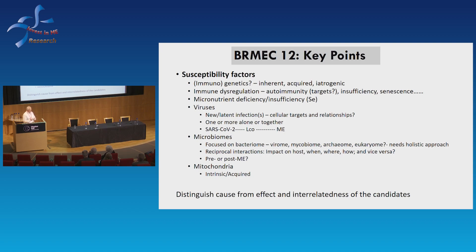Viruses are another susceptibility factor we've heard a lot about — either new infections such as SARS-CoV-2, or latent infections, of which the herpes viruses are the main candidates. We're now understanding more about these viruses: they don't all live in peripheral blood cells — they can hide in other tissue sites. Depending on where you sample, you may or may not detect the presence or activation of the virus. The enterovirus is a really good example — it seems to live in the stomach, doesn't appear in the blood, yet can cause severe symptoms.